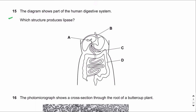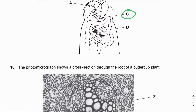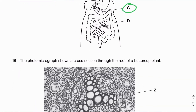MCQ number fifteen: The diagram shows part of the human digestive system — which structure produces lipase? Lipase is produced by the pancreas, because lipase is found in pancreatic juice which flows into the duodenum.